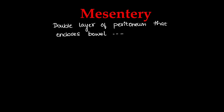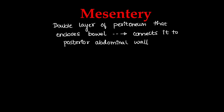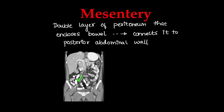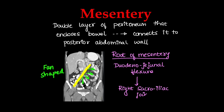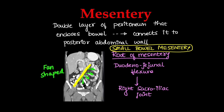Next, the mesentery is also a double layer of peritoneum that encloses the bowel loops and connects them to the posterior abdominal wall. The small bowel mesentery is a fan-shaped structure with a root in the posterior abdominal wall. It begins from the duodenal-jejunal junction on the left side and extends to the right sacroiliac joint or right iliac fossa, giving rise to the fan-like structure lining the small bowel loops. Vessels, nerves and lymphatics run through the mesentery to the small bowel.